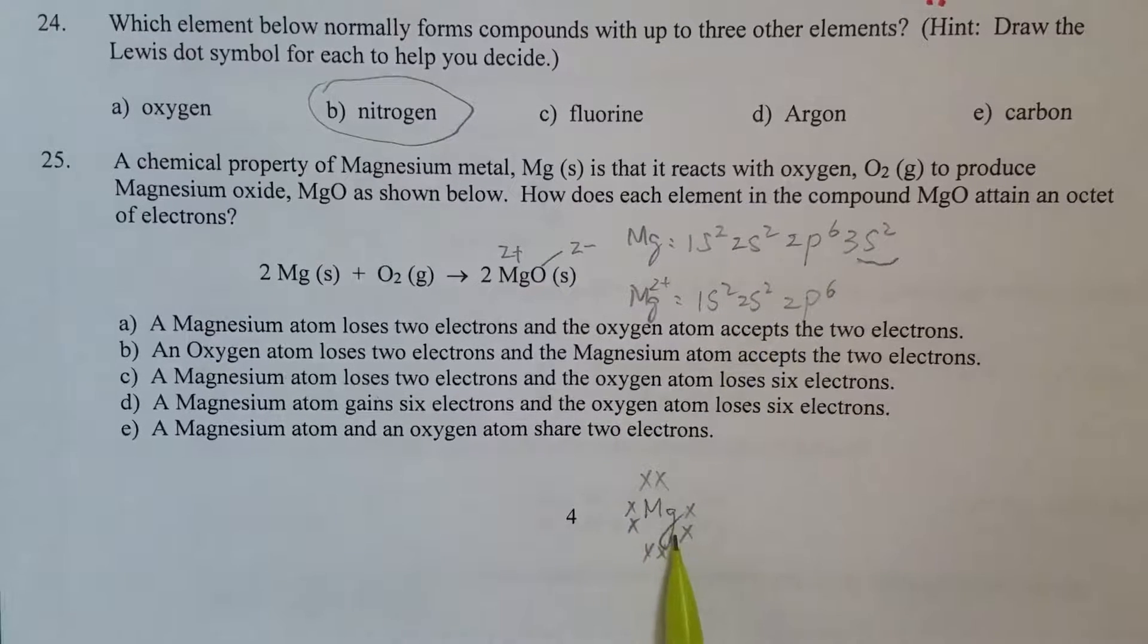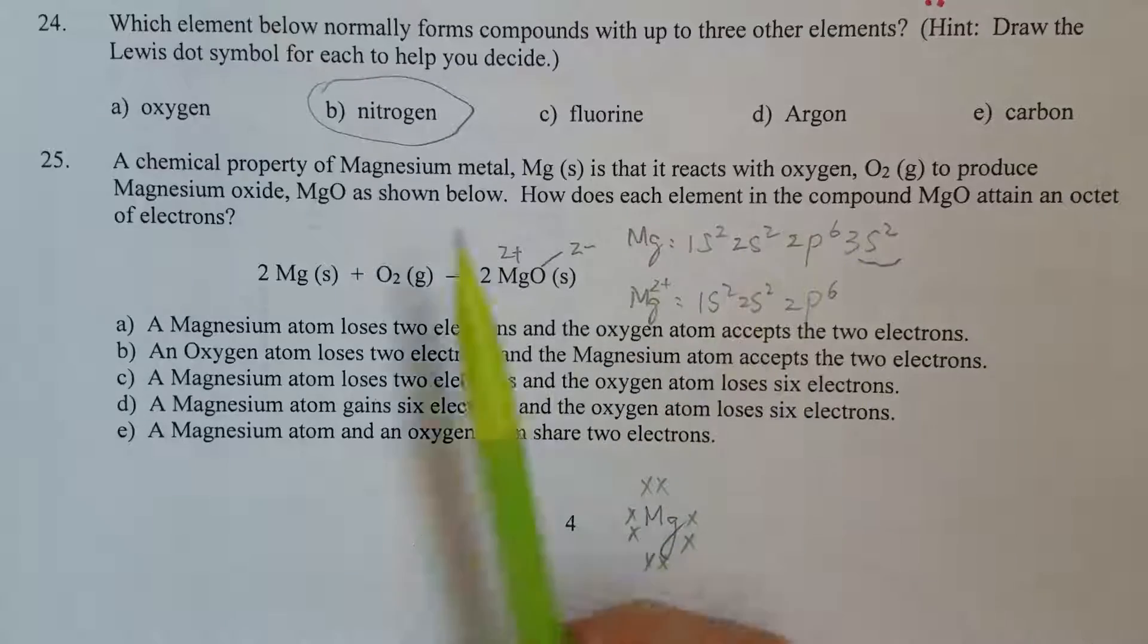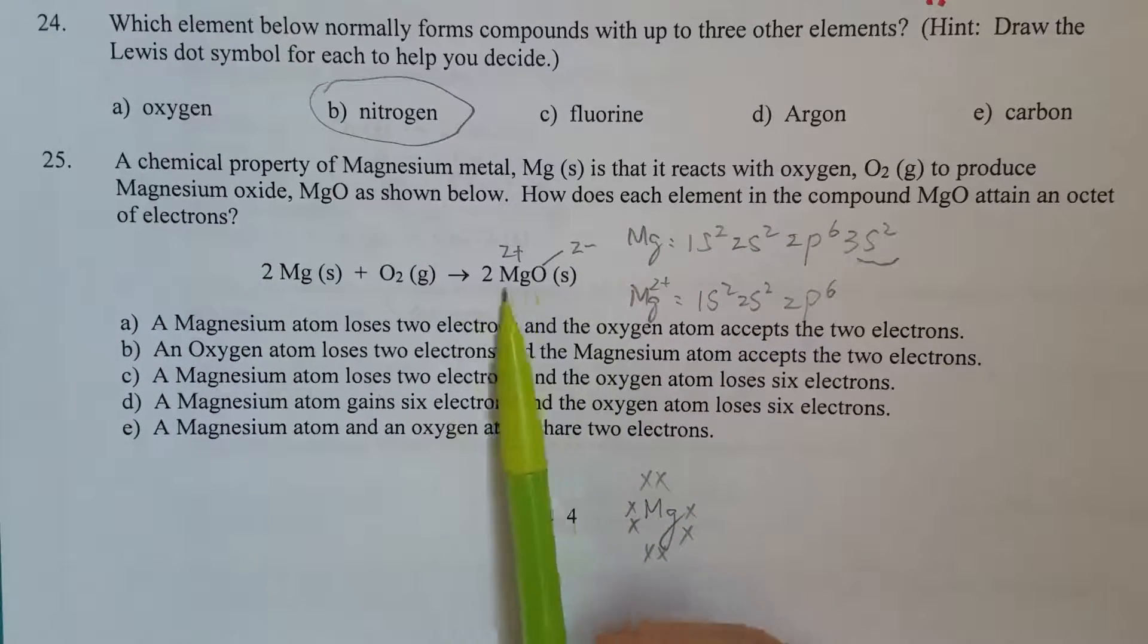So that's how magnesium attained the octet electrons in this compound.